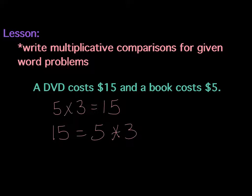So what is the mathematical relationship between the costs of the two items? So we're thinking mathematically this time. The cost of the DVD is three times that of the book.